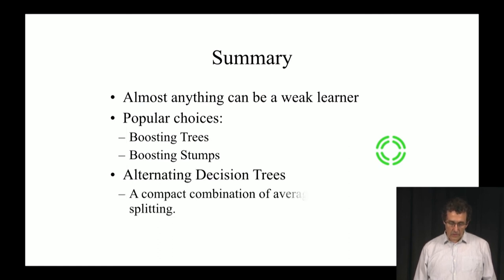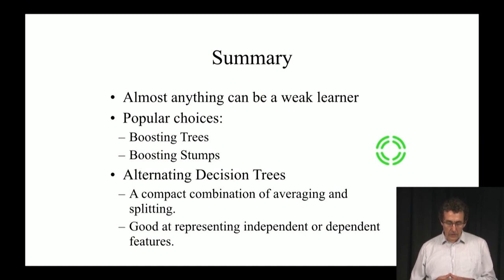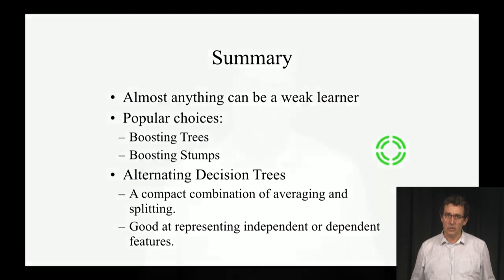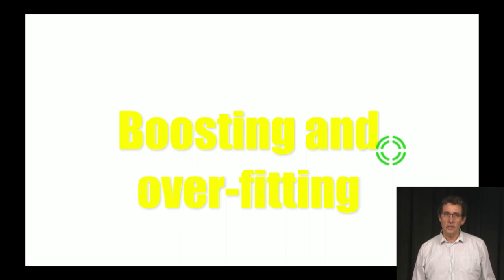And alternating decision trees, they basically combine the idea of averaging that boosting gives you and the idea of splitting that decision tree gives you in a recursive structure that can capture a lot of information in a small number of splits. It can therefore be good in representing both independent features, so features that give you independent information, and that basically would be represented as averaging them, or dependent features where you want to check on feature two only after you know if feature one is, let's say, smaller than some threshold. Next we're going to talk about boosting and overfitting. See you then.